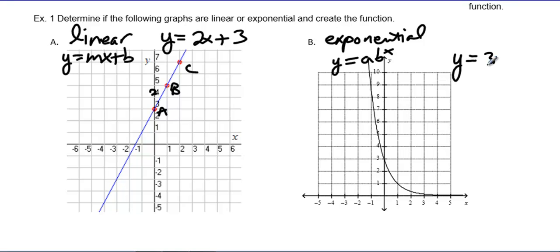I have y equals 3 times some factor that we have to figure out to the x power. Now, when I look at this, notice I start up high, and as I progress to the right, I'm getting smaller, I'm going down.